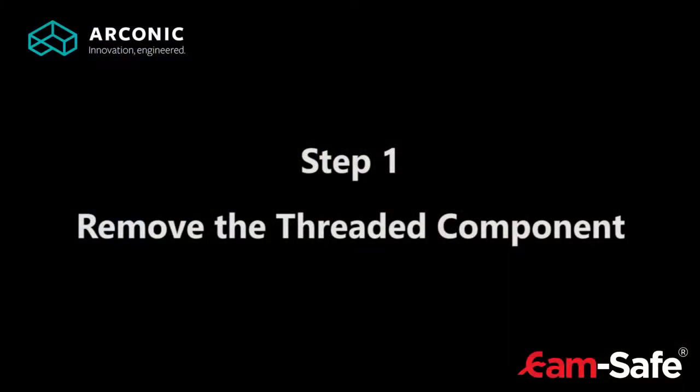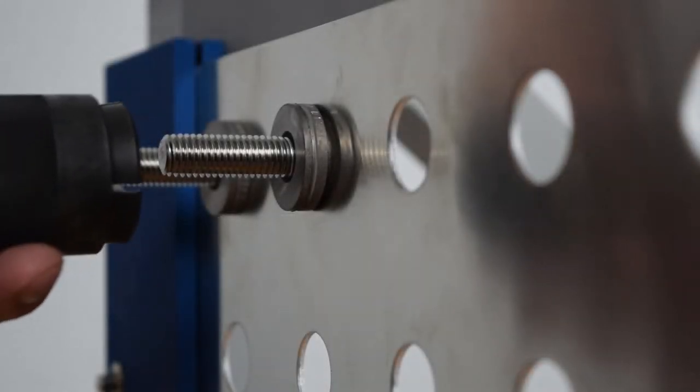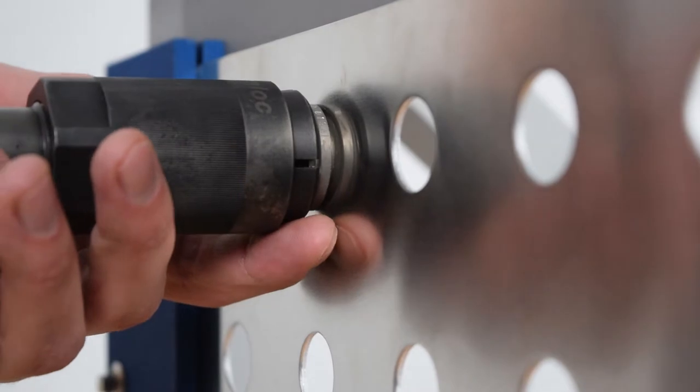Step 1: Remove the threaded component. To remove the installed grounding connector, our removal tool is needed.